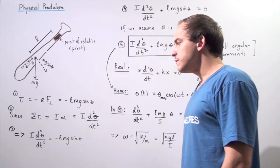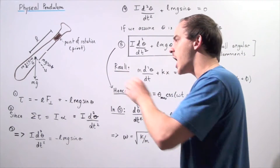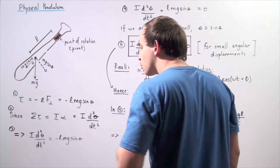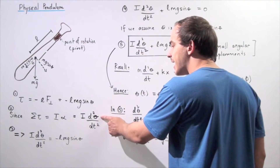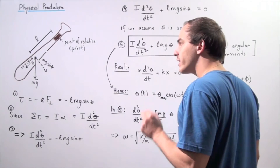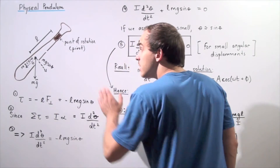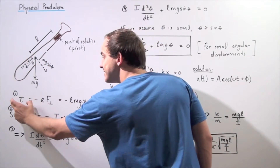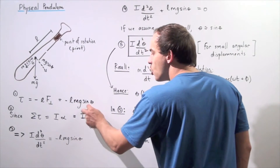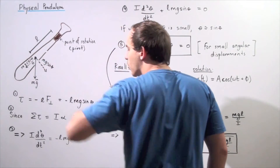Recall the second law of motion for torque: the net torque acting on the object equals the product of the moment of inertia I and the angular acceleration, where angular acceleration is the second derivative of the angular position function with respect to time. The net torque acting on the object equals the only torque at the center of mass: negative L times M times g times sine of theta, where theta is the angle between the gravitational force and the component parallel to the lever arm.